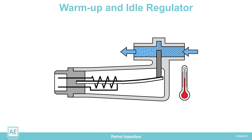When the engine is fully warmed up, the regulator valve completely closes the bypass line and stops the flow of additional air. Now the engine sucks in air only through the throttle valve. The regulator has a heater that electrically heats the bimetal, limiting the opening time and guaranteeing that the regulator only works when the engine is cold.